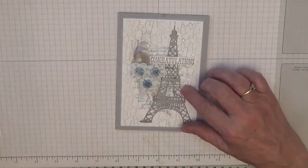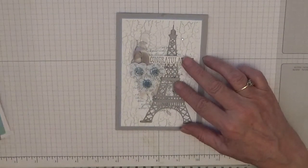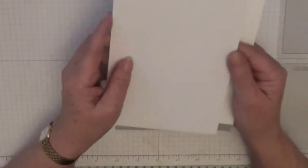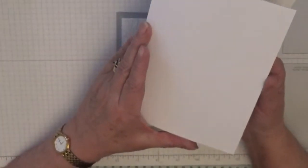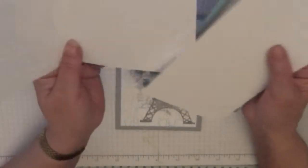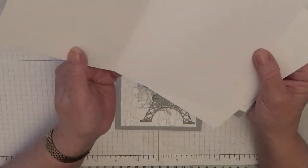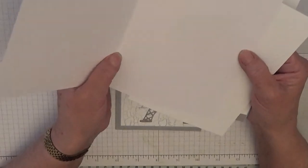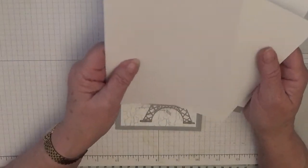So to make her card I'm going to do it five by seven. I have a card base here of ten inches by seven inches and I've scored at five inches and folded it in half.